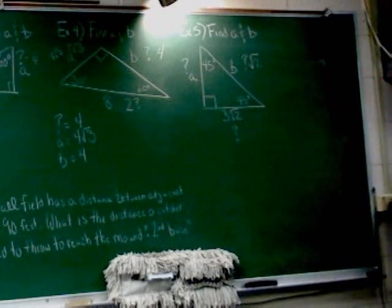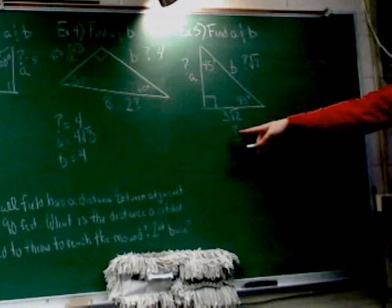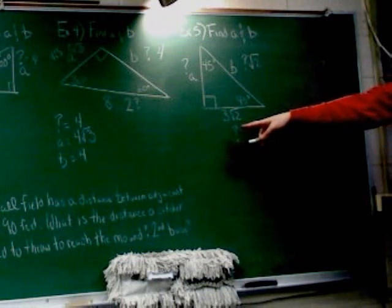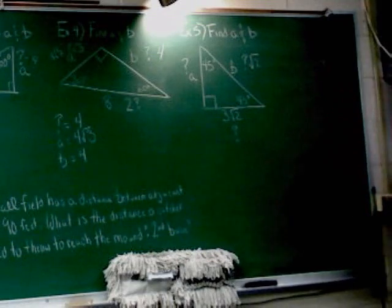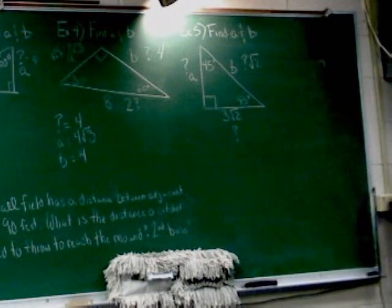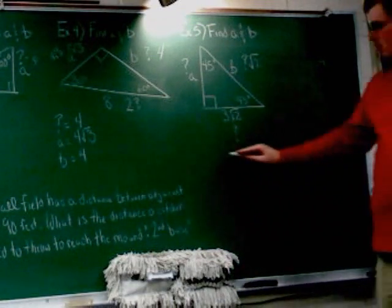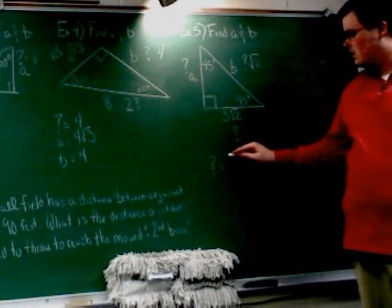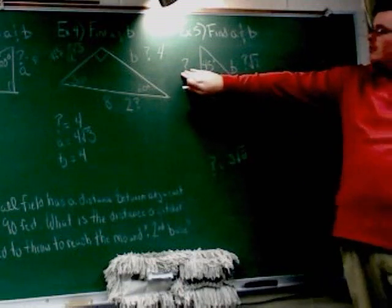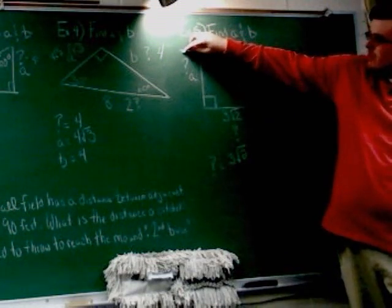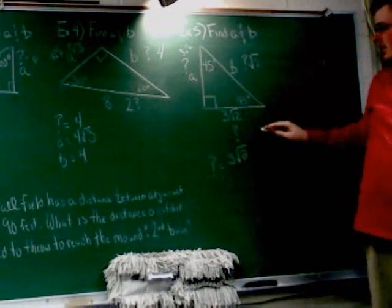Now the instinct here is to say, okay, question mark root 2 should be here because that's got root 2 in it. Well that's not right in this one. So question mark is actually equal to 3 root 2, which is a little bit different. So question mark equals 3 root 2. We know this question mark has to also equal 3 root 2, so that's A.